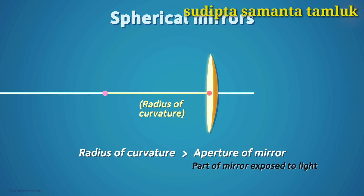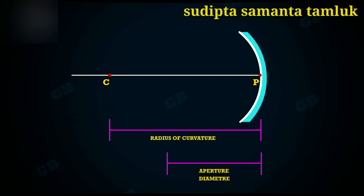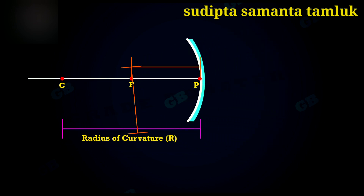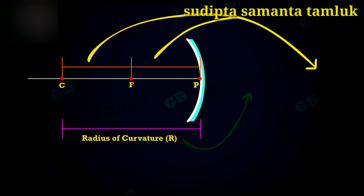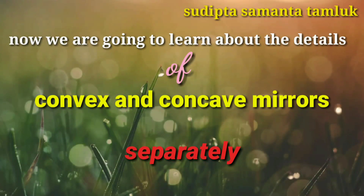Light can be incident anywhere in the aperture region. If we cover some part of the mirror with an opaque substance, its aperture is reduced. In this lesson we discuss spherical mirrors whose aperture is much smaller than the radius of curvature. There is a relationship between the radius of curvature R and focal length F: for spherical mirrors with small apertures, the radius of curvature is equal to twice the focal length, written as R = 2F.